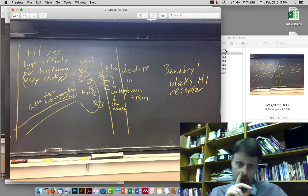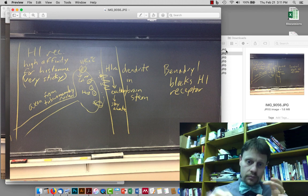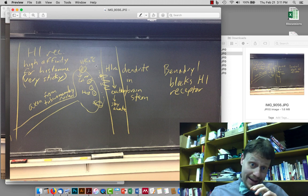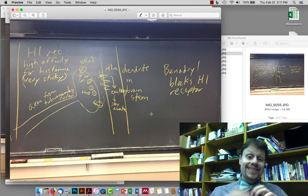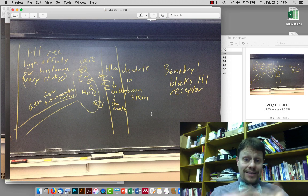The first projection is from the tubero-mammillary nucleus into the brainstem, so dendrites in the brainstem. At this projection, you find H1 receptors. The H1 receptors are excitatory receptors. They're G-protein-coupled receptors, but they excite the receiving neuron. In the brainstem, they stimulate cells which help to keep you awake.